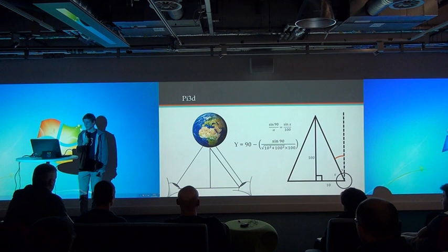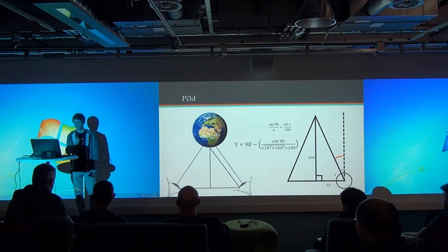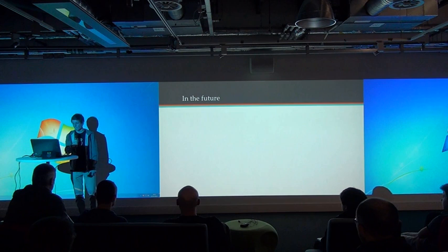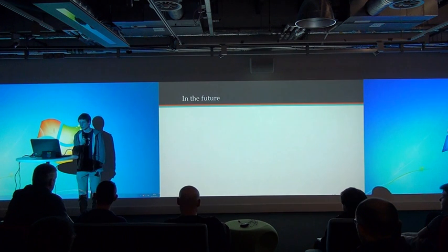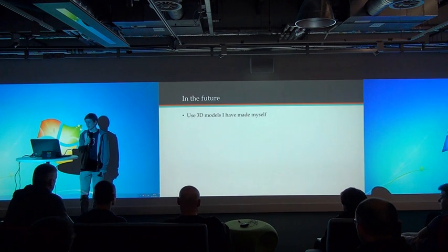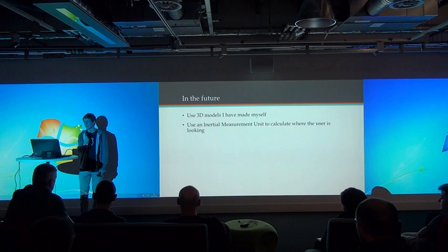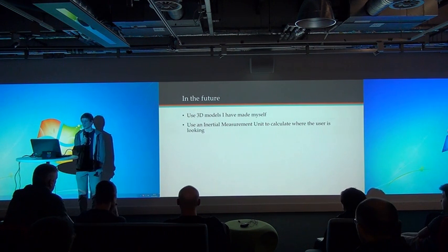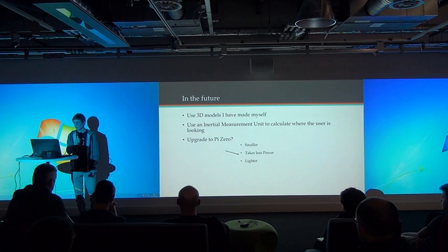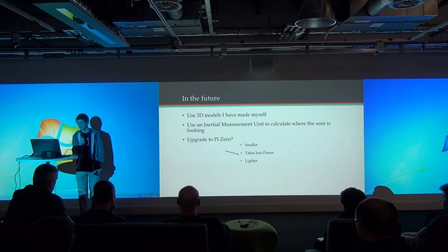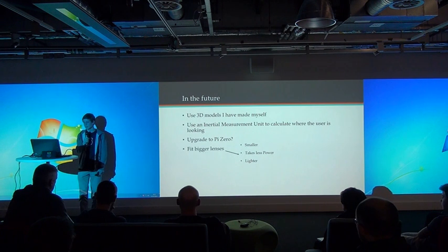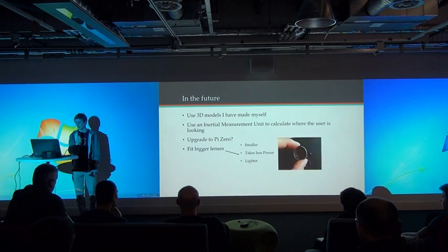I've also started to create a game in which the player is a spaceship and has to dodge space debris. In the future, I hope to use more models that I've created myself, and hope to create my own program rather than using the demo files. I also hope to use an inertial measurement unit to calculate where the user is looking, and maybe even operate with the Pi Zero — this is smaller, takes less power, but crucially it's lighter. I'm also looking to fit bigger lenses; the ones I'm replacing them with are twice as big.